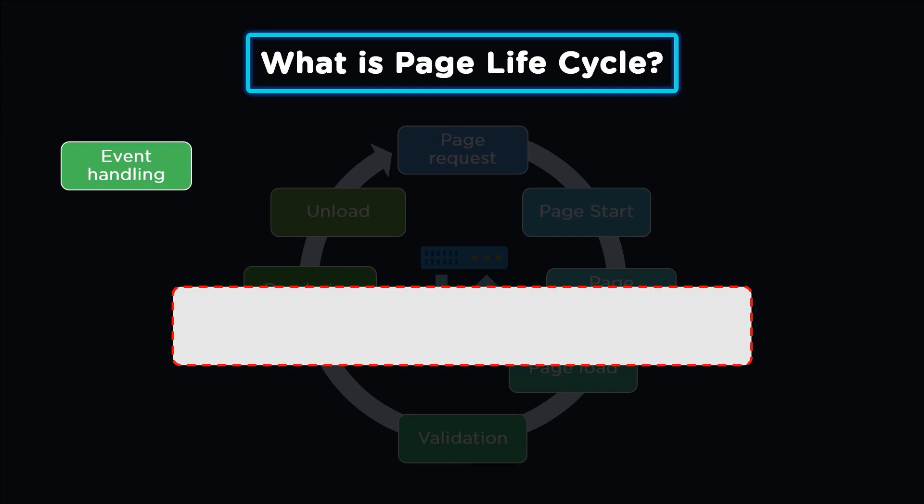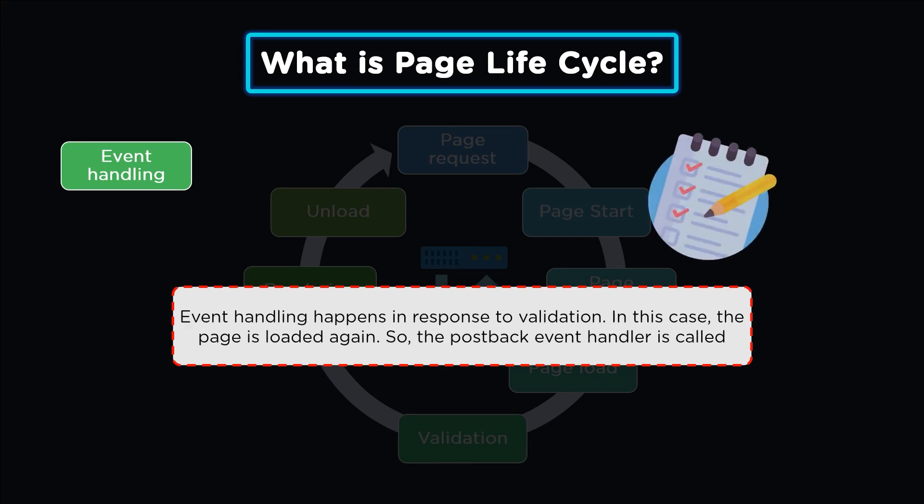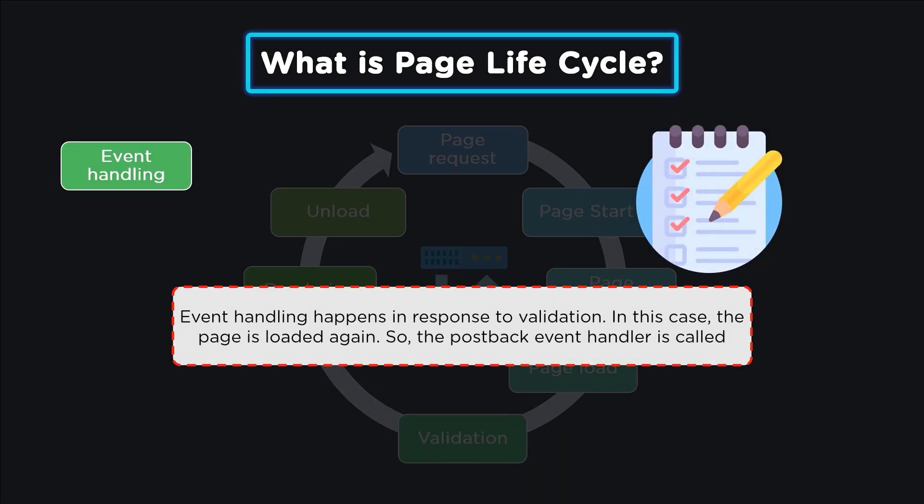The sixth phase is event handling, which is the response to the validation phase. In this phase, pages are loaded again and display the same information. In order to overcome this, a postback event is called, which helps in checking the credentials of the user.